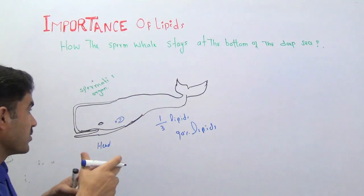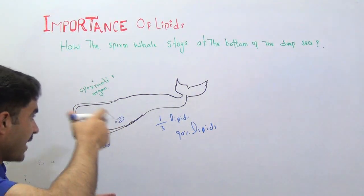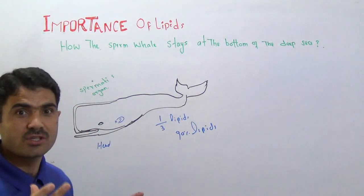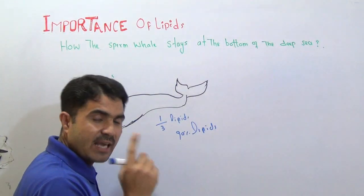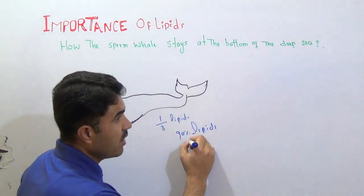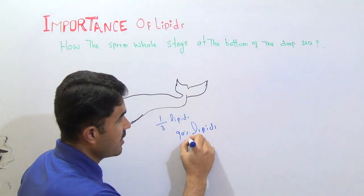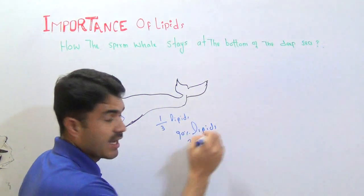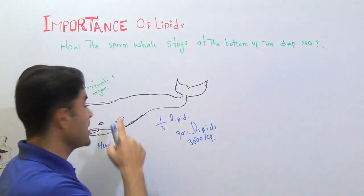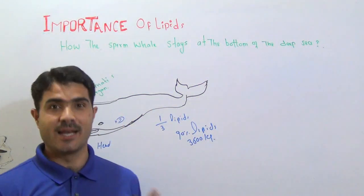And the head, you know, you can see in the diagram, it looks large, very big in size. And if you want to see how many in kg, that is 3600 kg, 3600 kg lipids is present in the head of that whale.